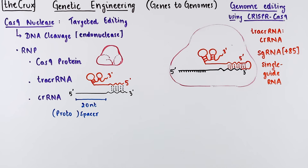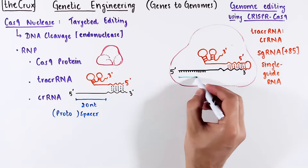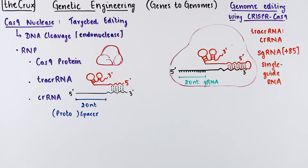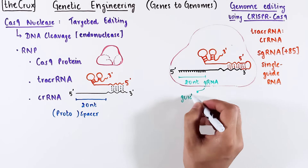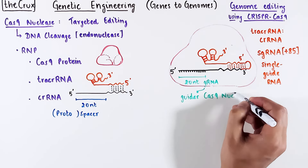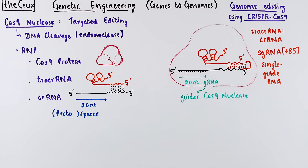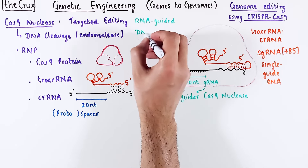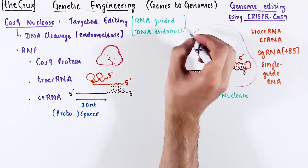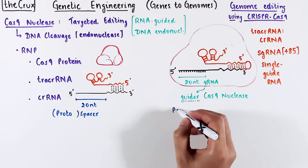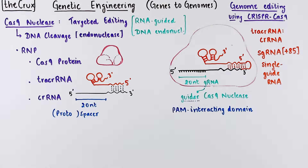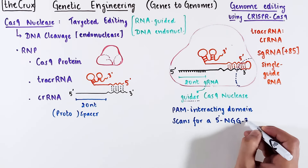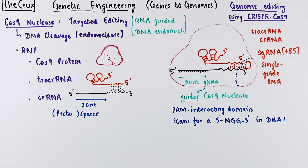Regardless of technicality, when speaking about sgRNA, the 20 nucleotides at the 5' end of the sgRNA — the spacer part — are quite liberally also sometimes called the guide RNA. That is the portion which guides Cas9 nuclease to make cuts. Therefore, Cas9 nuclease is an RNA-guided DNA endonuclease. The guidance of Cas9 actually starts with the PAM-interacting domain of the Cas9 protein, which scans the target DNA for an NGG sequence.